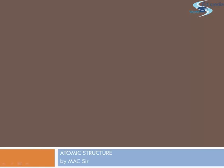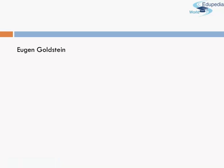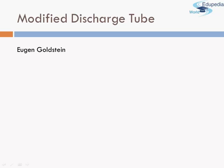Hello everyone and thanks for watching Edupedia World videos. In today's session of atomic structure, we'll start with the discovery of positive rays. We'll try and understand what they are and some of the properties of positive rays. We already know about the discharge tube experiment that led to the discovery of cathode rays.